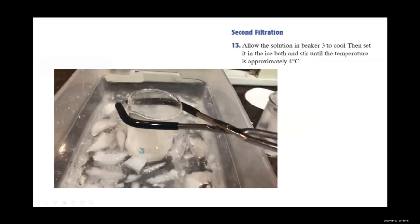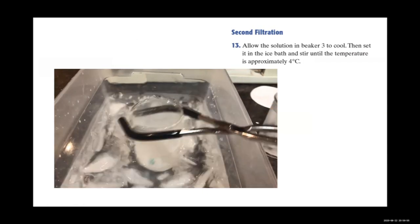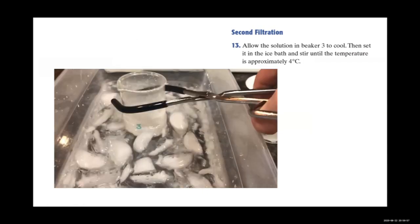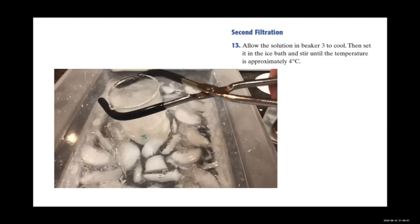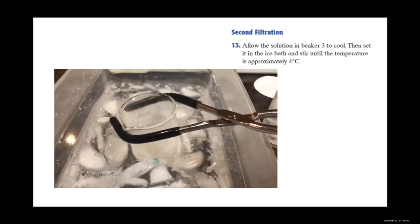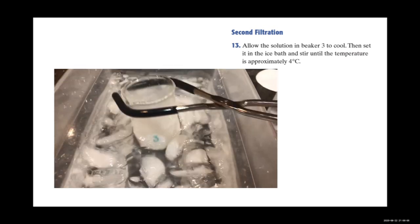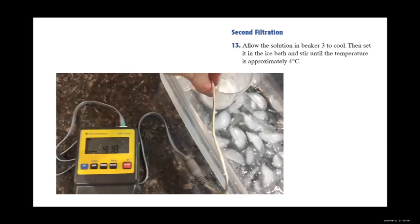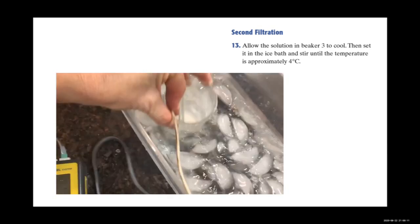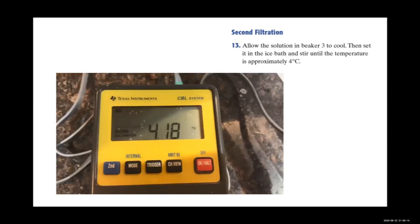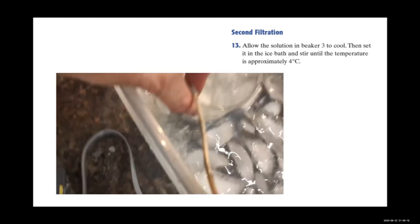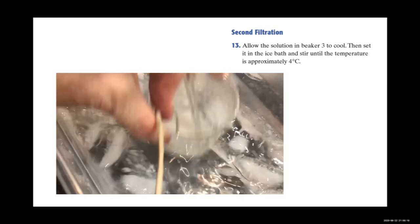For the second filtration, allow the solution in beaker 3 to cool, then set it in the ice bath and stir or swish it again until the temperature is approximately 4°C. You'll notice that the remaining solution is much thicker this time — more like a slurry.